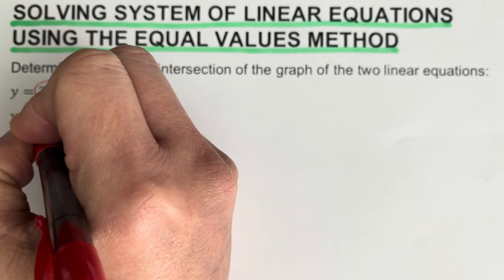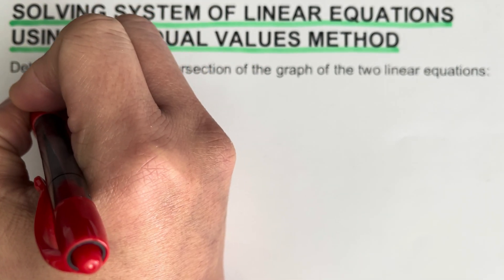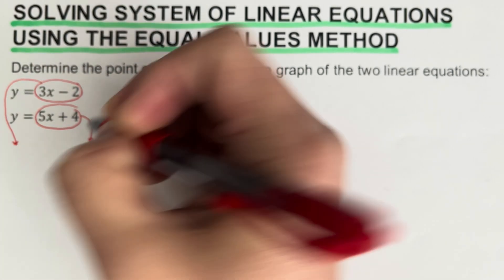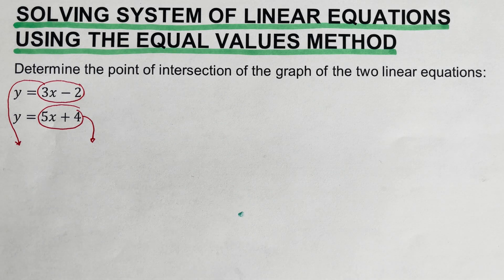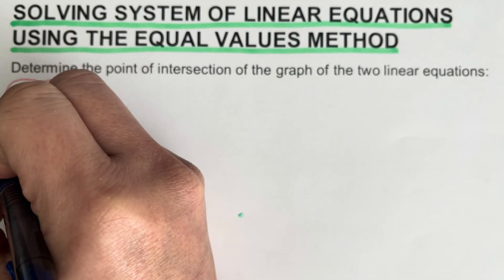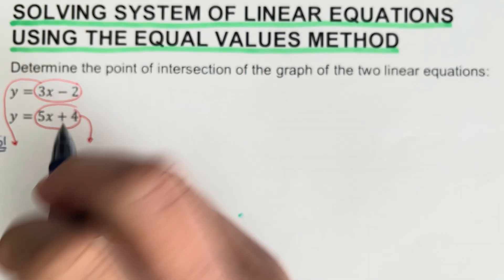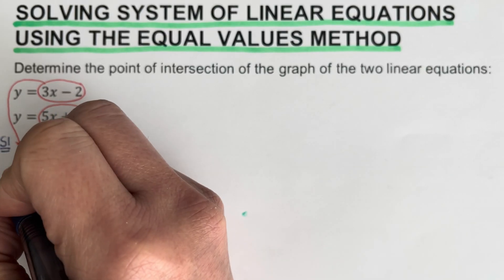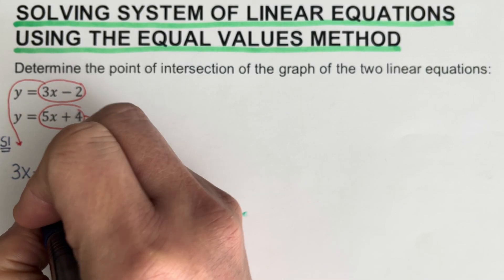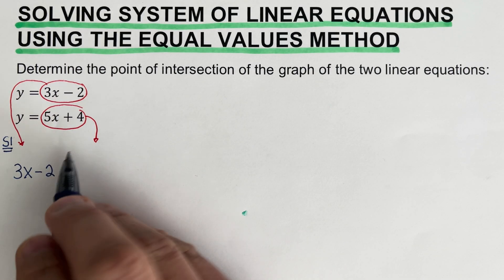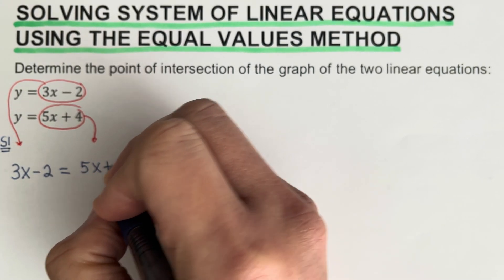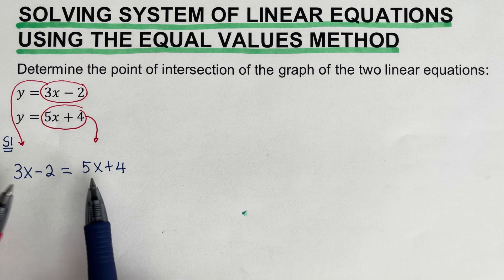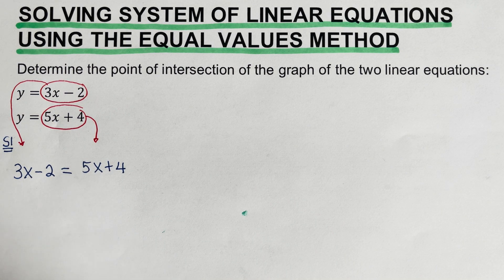That means the two expressions on the right side of the equations would be equal to each other. So I will set up and label this as Step 1. The equation becomes 3x minus 2 equals 5x plus 4. That is how we get this equation by equating the two original equations to each other.